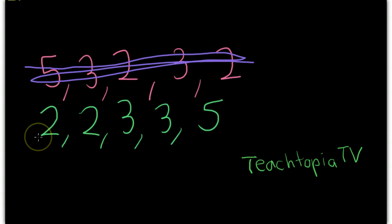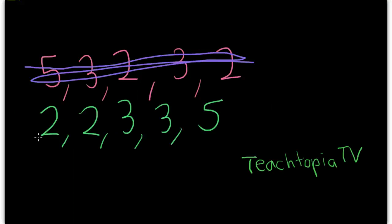Now, so we have 2, 2, 3, 3, 5. You're going to notice right away that 2 occurs more than once, and 3 occurs more than once. 5 does not occur more than once.